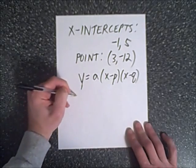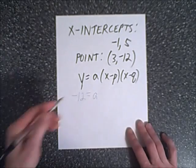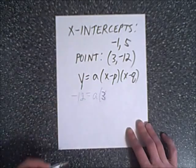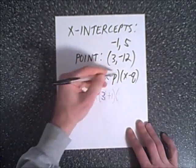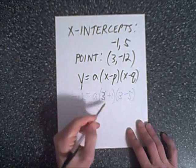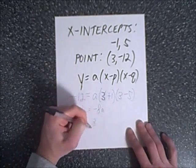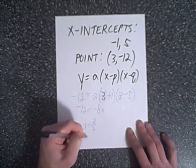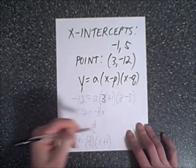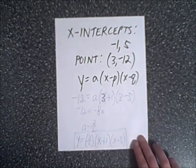We plug in y = negative 12, and our a value is what we're solving for. We substitute x = 3, p = negative 1, and q = 5 into the intercept form: negative 12 = a(3 − (−1))(3 − 5) = a(4)(−2) = negative 8a. Therefore a = 3/2. Our final equation is y = three-halves times (x + 1)(x − 5).